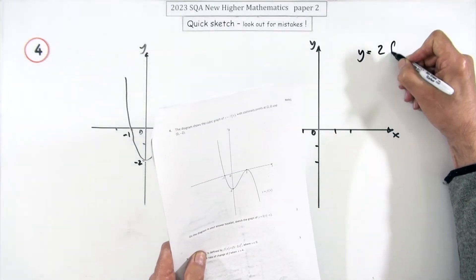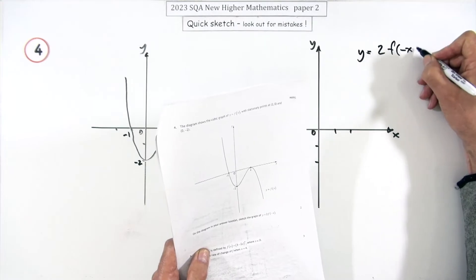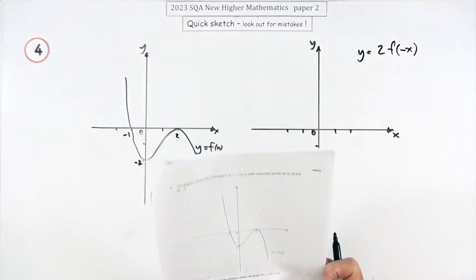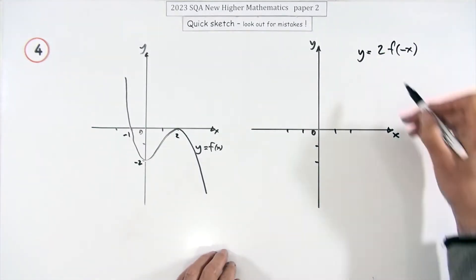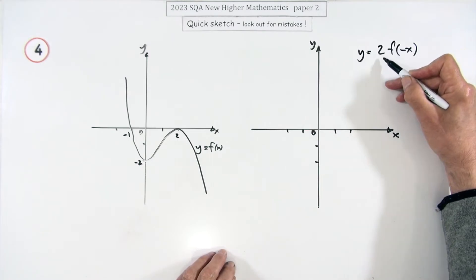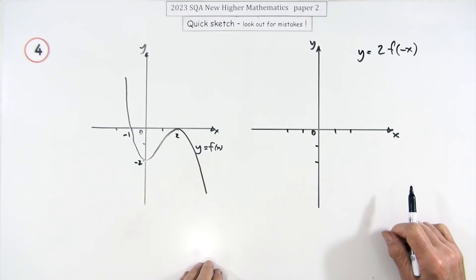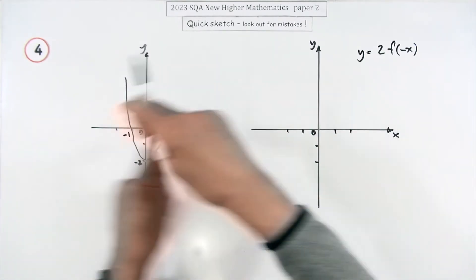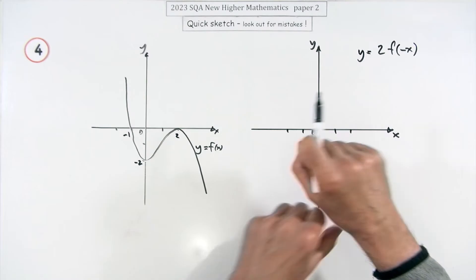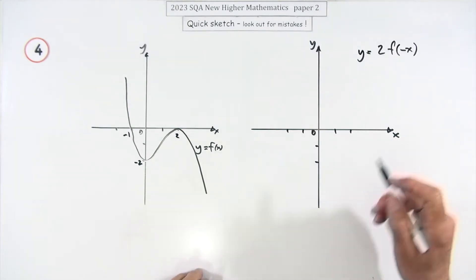Well, two times it means it'll have double the answers, so it's getting stretched two times that way. But the answers come from the opposite halves, so it gets flipped about the y-axis and then stretched.